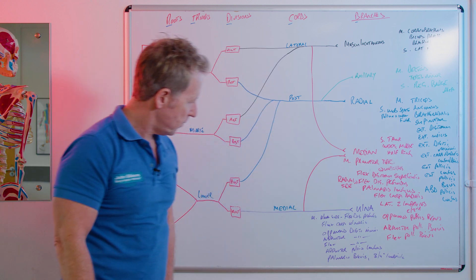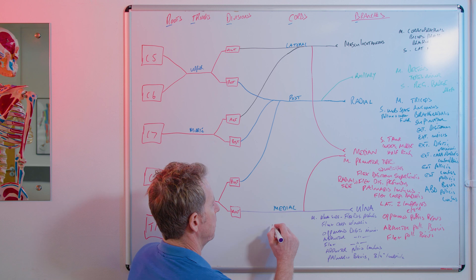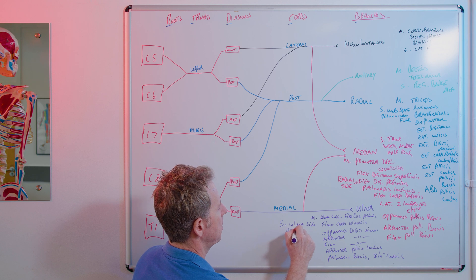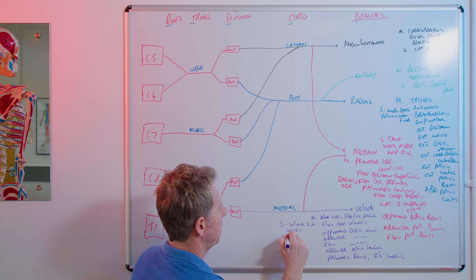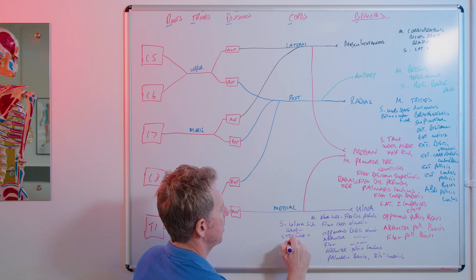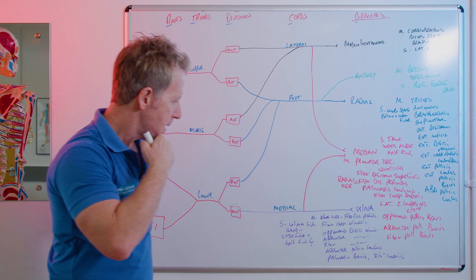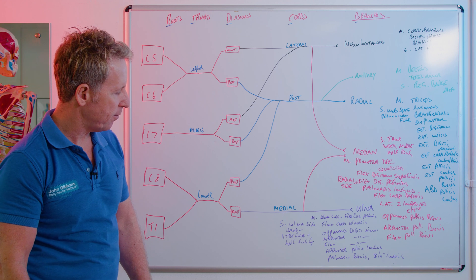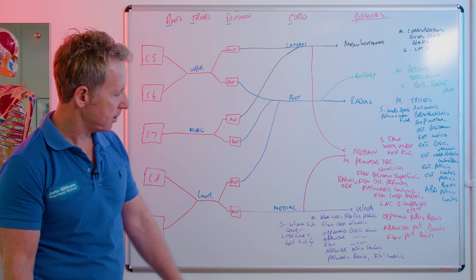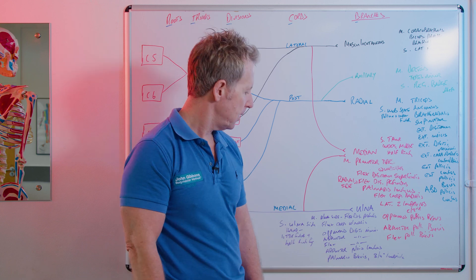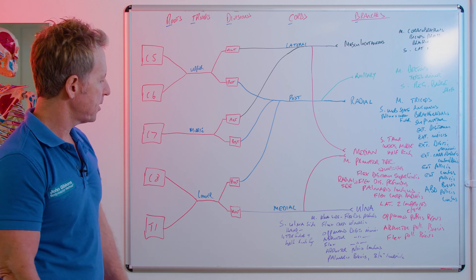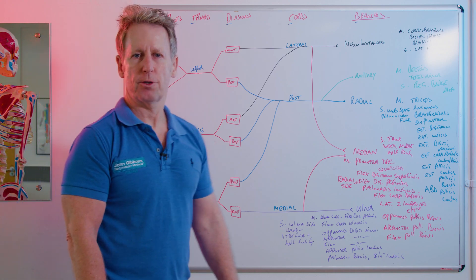The sensory supply of the ulnar nerve is the ulnar side of the hand — naturally the little finger plus half the ring finger. I need to check one thing: I'm not sure if it's adductor pollicis longus; it could actually be abductor pollicis brevis — I apologize if I got that wrong. I hope you enjoyed the talk on the branches of the brachial plexus. Please subscribe to my channel. Thank you.